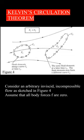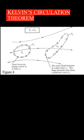Consider an arbitrary, inviscid, incompressible flow as sketched in Figure 4. Assume that all body forces F are 0. Choose an arbitrary curve C1 and identify the fluid elements that are on this curve at a given instant in time T1.